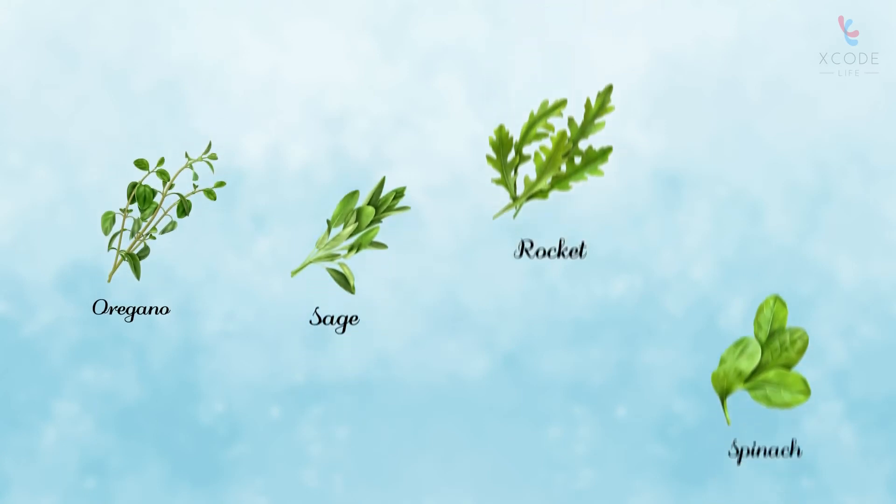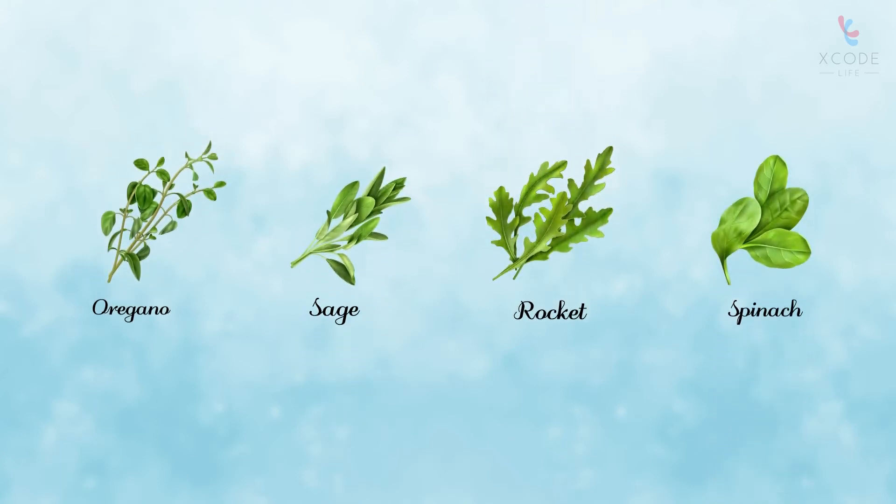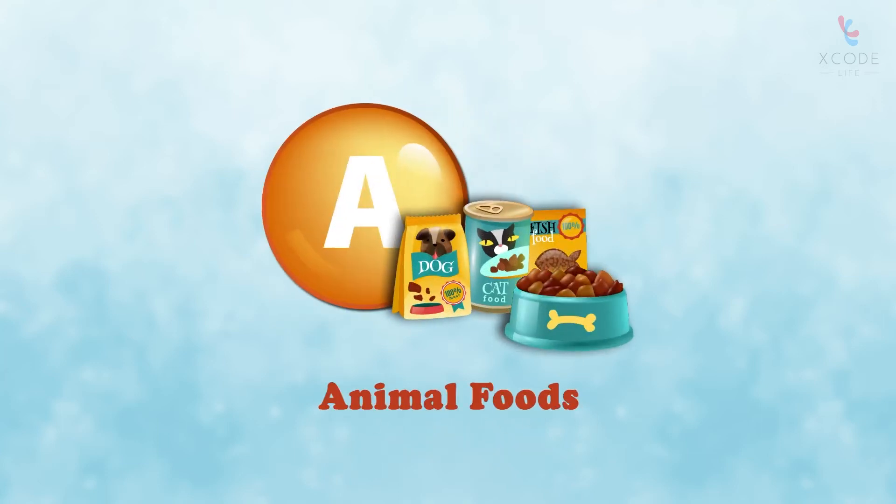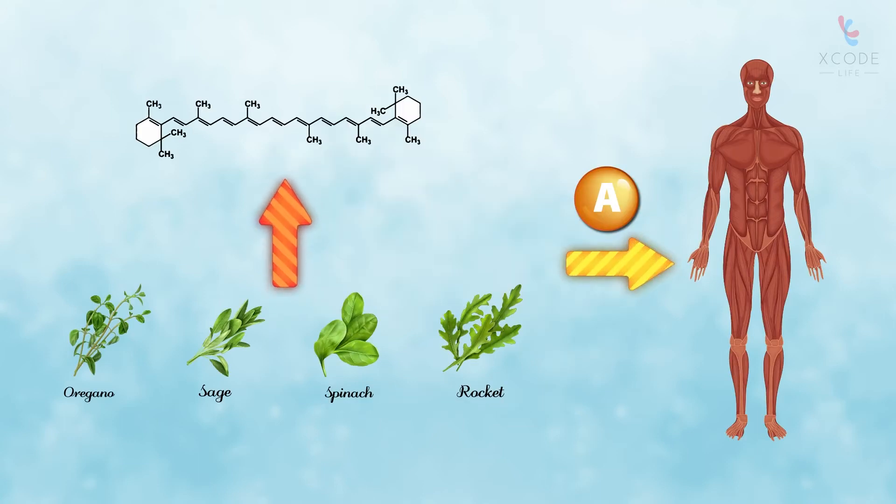All plants provide vitamin A in the form of beta-carotene, among other forms. Vitamin A is present as retinol, a form of active vitamin A, in animal food sources. The beta-carotene from plant sources must be converted to active vitamin A for it to be useful to the body.